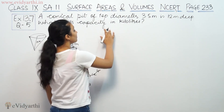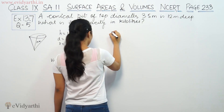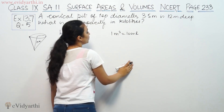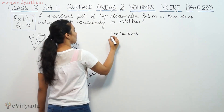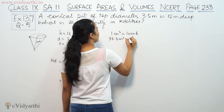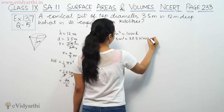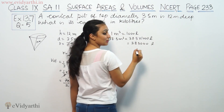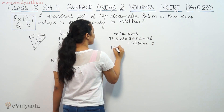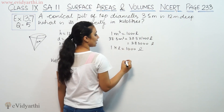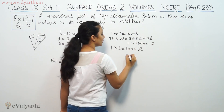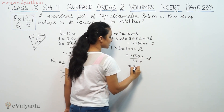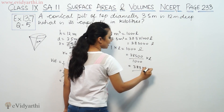Now, capacity is in kilolitres. You know 1 cubic meter is equal to 1000 liters. So we first convert to liters: 38.5 cubic meters will be equal to 38.5 into 1000, which gives 38,500 liters. That means 38.5 kilolitres.